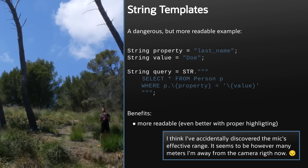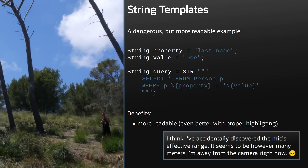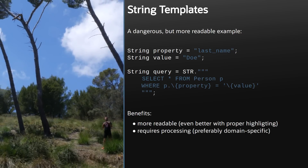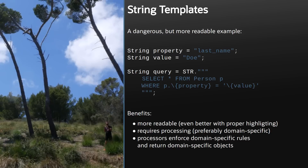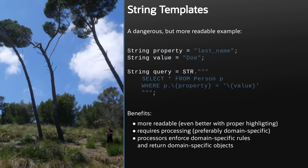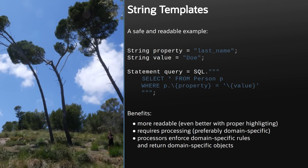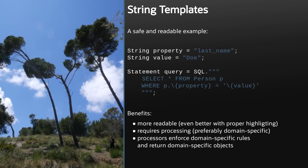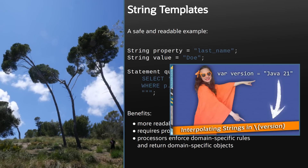Not only do they make it easy to embed expressions in string literals or text blocks by encasing them in an opening backslash-curly-brace and a closing curly brace, they also enforce processing of such string templates by domain-specific string processors. Such processors retrieve the string portions and variables separately and return instances of any type. The obvious processor just concatenates and returns a string, but there are other possibilities: an SQL processor could validate and parse the statement syntax and return a java.sql.Statement, and a JSON processor could return a JSON node. If you want to dig deeper, check out Inside Java newscast number 47.